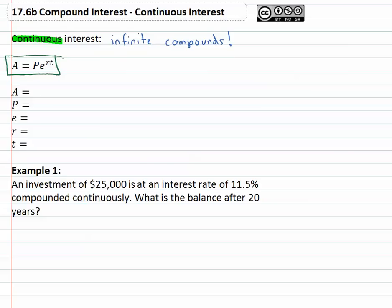A equals P times E to the RT power. Now a couple of these variables we've seen before. We know A is the future amount or future value.